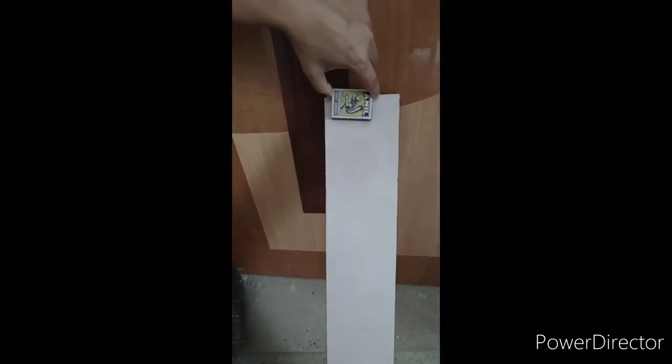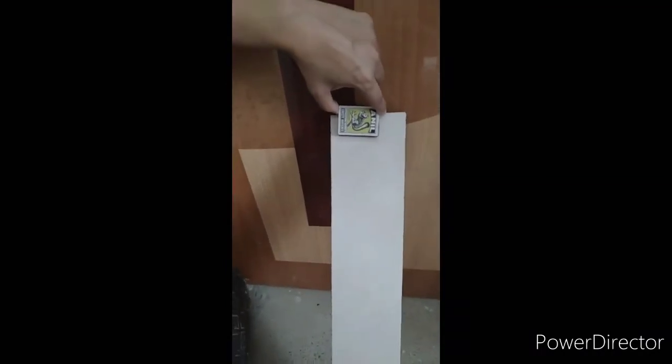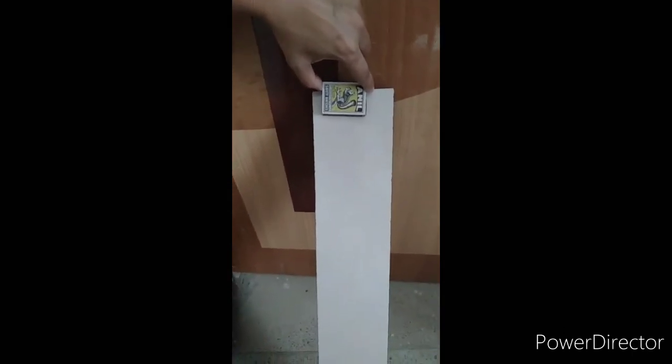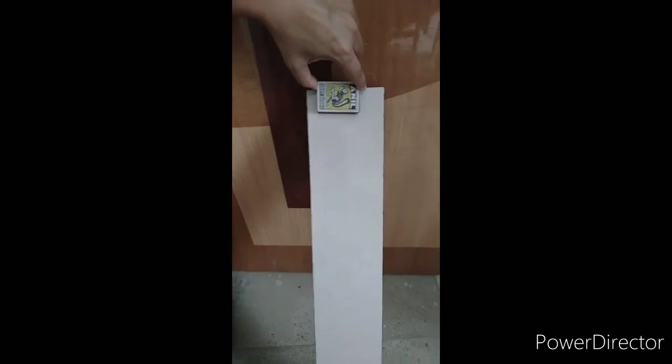If we place matchbox on a slide, it will slip down because of its flat surface.